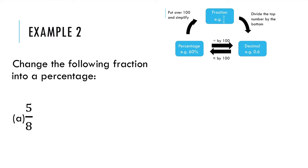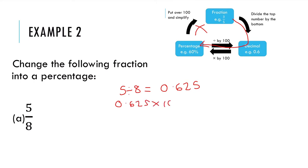Example 2: change the following fraction into a percentage. From our diagram, going from a fraction to a percentage, we can't go back against the arrow — we need to follow the cycle around. So we need to take it to a decimal, then a percentage. Firstly I'm going to divide the top number by the bottom number, so I'm going to do 5 divided by 8, which gives me 0.625. Then to get that to a percentage, I'm going to times it by 100, which gives me 62.5%. We can do that part without a calculator by moving the decimal point two places to the right. You can do all this in one step — divide the top by the bottom and multiply by 100.